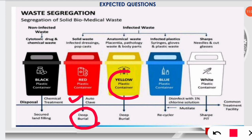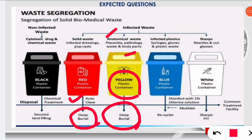Yellow color containers store anatomical waste — mostly placenta, pathological waste, and body parts. These are treated by incineration or plasma pyrolysis and then placed in deep burial.